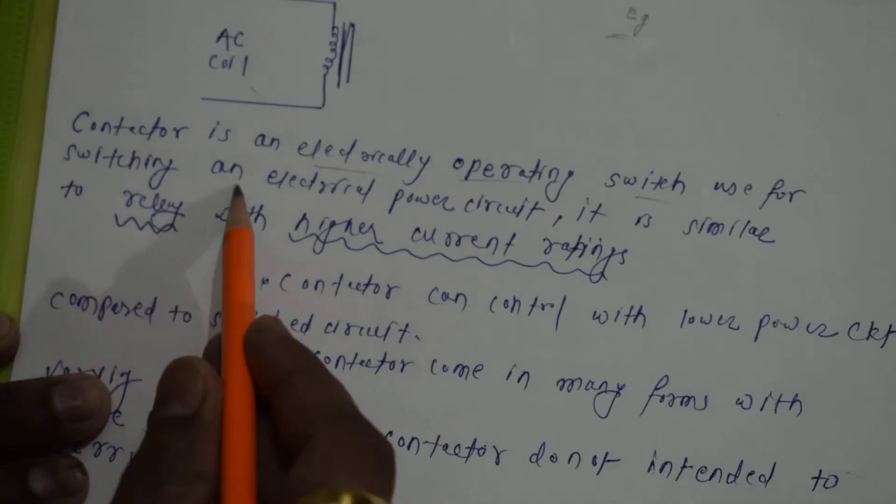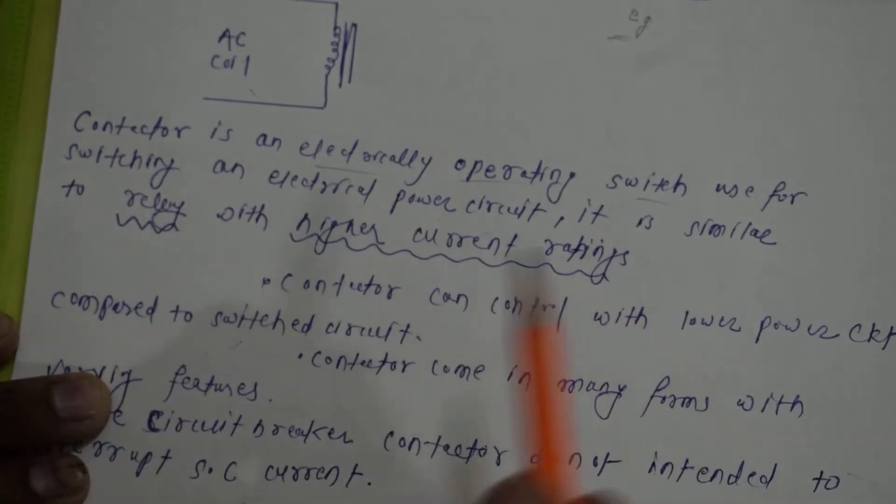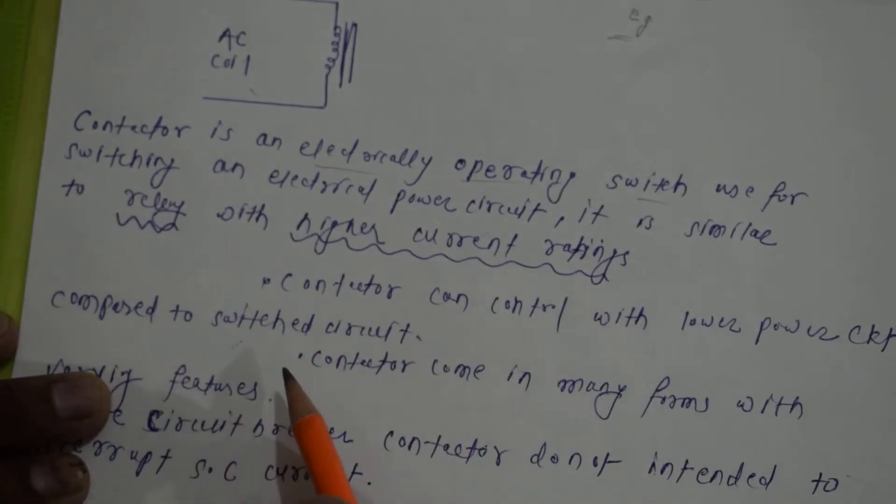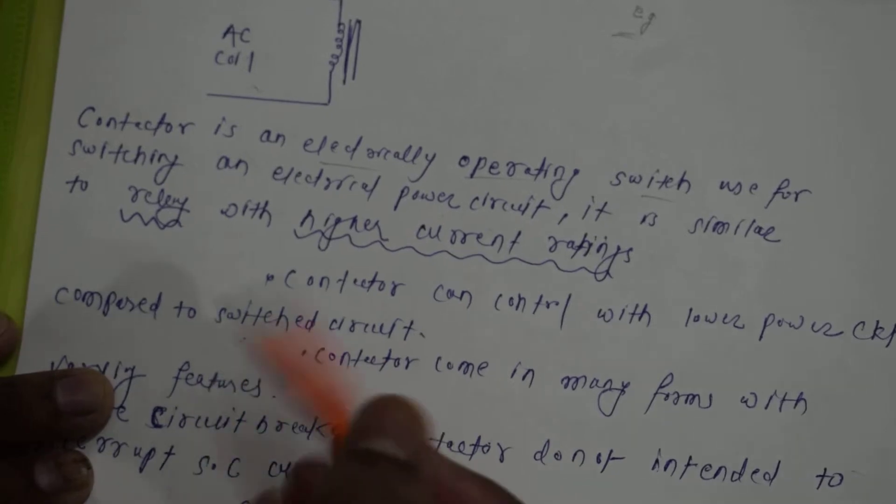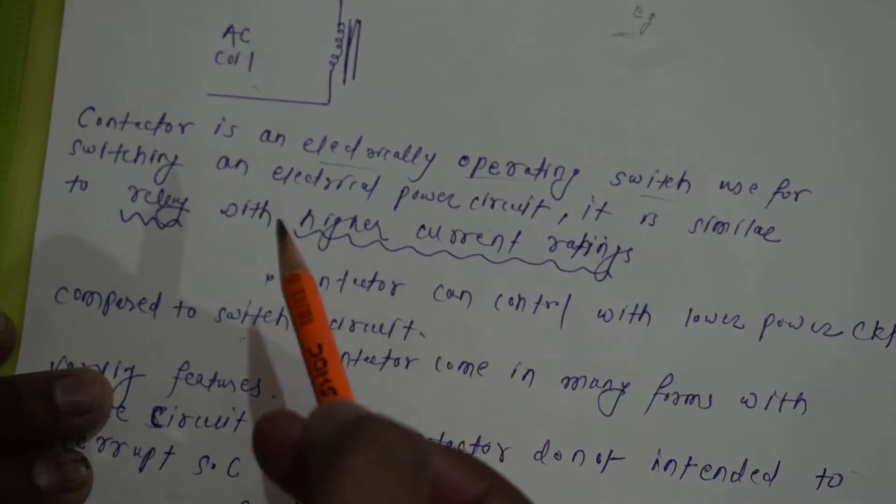Contactor is used for switching an electrical power circuit. The electrical power circuit is on or off, we use the contactors. In automation, contactors are used like PLC.